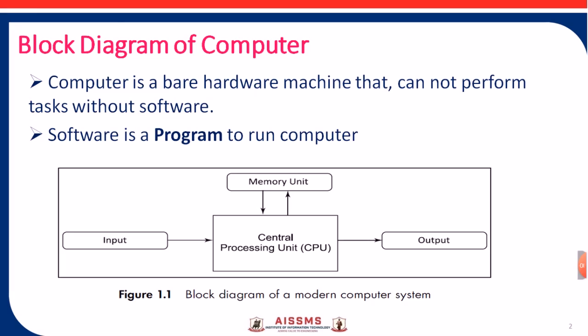We are providing the data to the computer through different input devices like keyboard, scanner, and mouse. Central processing unit gets the data from input devices and performs operations on data with the help of memory unit. Memory unit is very important for storing the data also. Then after that we are getting the desired output on output devices like monitor or printer.